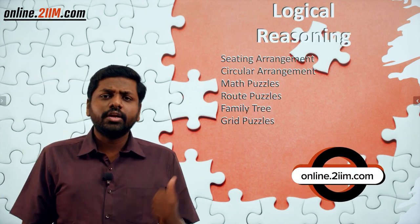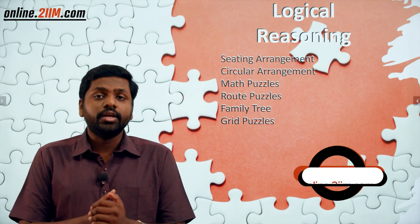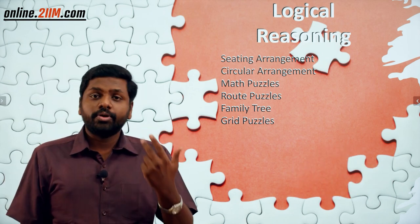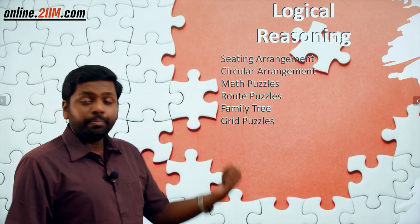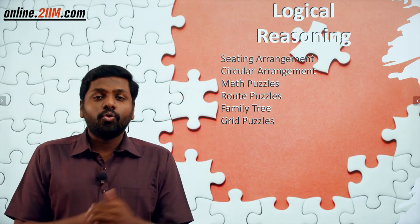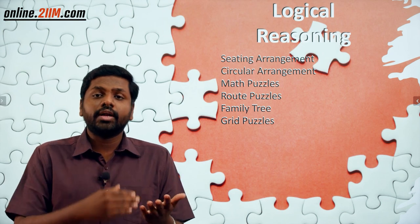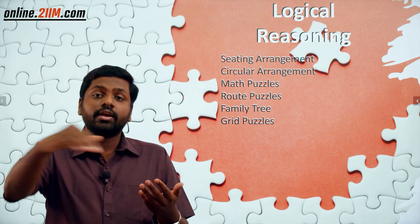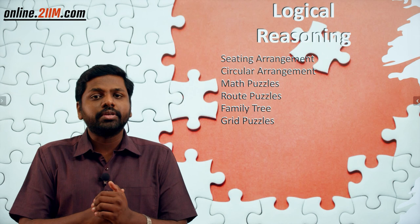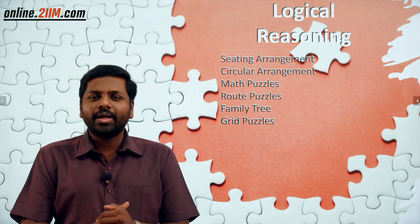Logical Reasoning was about seating arrangements, circular arrangements, math puzzles, route puzzles, family trees, and grid puzzles. In grid puzzles, you'd be given five professions, five cars, and five colored houses to match up. All of these were important topics.